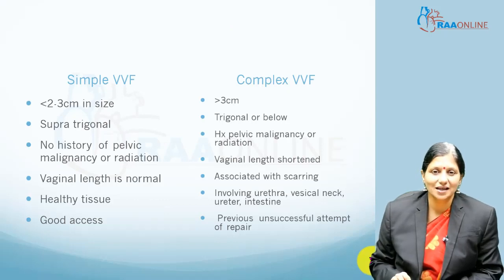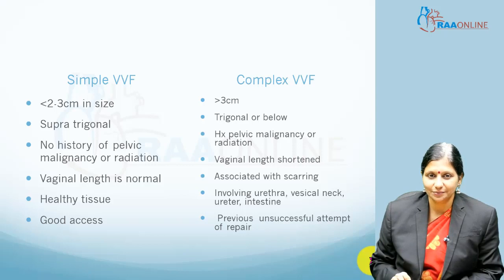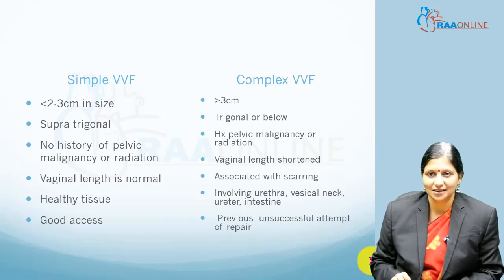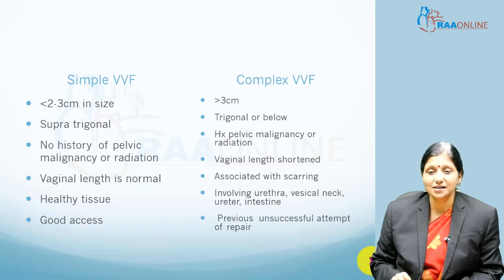Simple fistulas are small, usually 2 to 3 cm in size. They are separate and trigonal. There is usually no history of pelvic malignancy or radiation. The vaginal length is normal, the tissues are healthy, and we have good access.